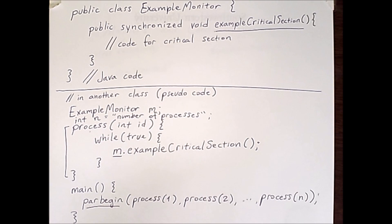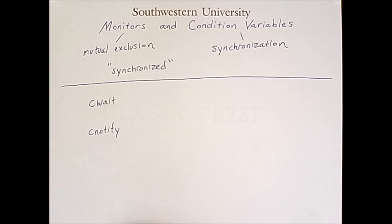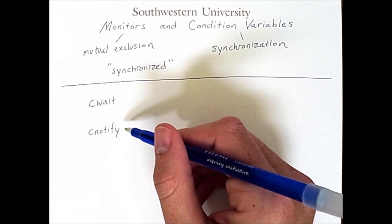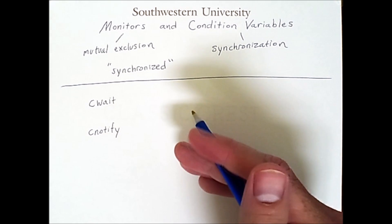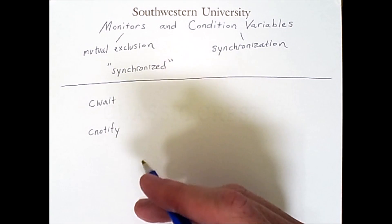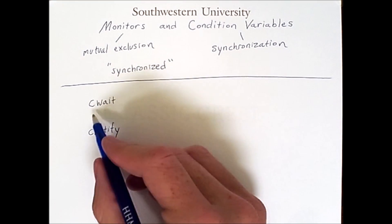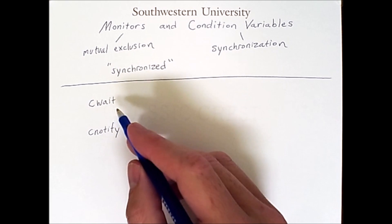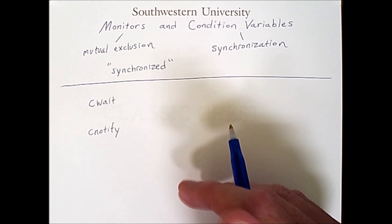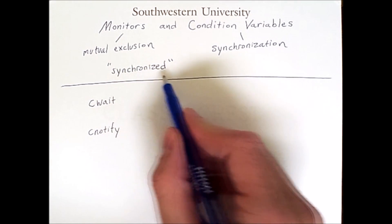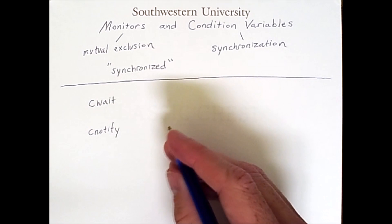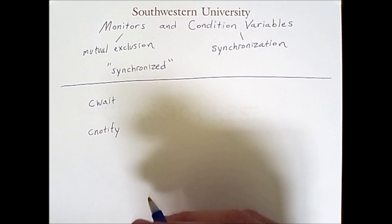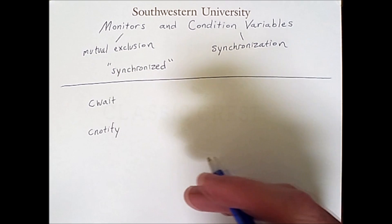The idea behind a condition variable is the following. Condition variables are another type of data structure, and they have two important operations: c_wait (condition wait) and c_notify (condition notify). When you create a condition variable, it is either implicitly or explicitly associated with a specific monitor. The c_wait command is executed inside of a monitor — specifically inside a synchronized method — and it tells the current thread or process to block itself and give up control of the monitor lock to some other thread or process that is waiting for it.